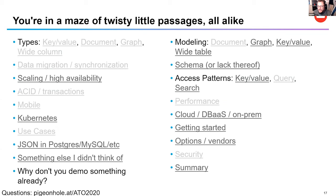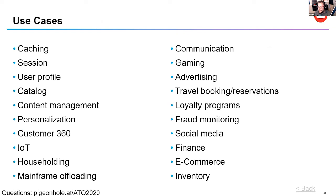I'll share the slides — come by the Couchbase booth and I'll upload them and give you a link. On graph databases: one of the coolest use cases is fraud monitoring, where you can very easily identify outliers. Similarly, recommendation engines — like Amazon saying 'we noticed you like this, maybe you'll also like this' — are great graph database use cases.